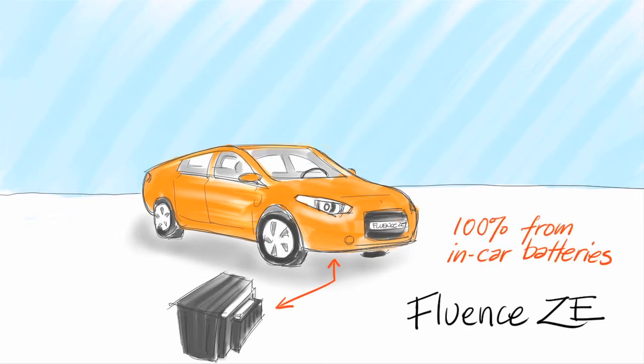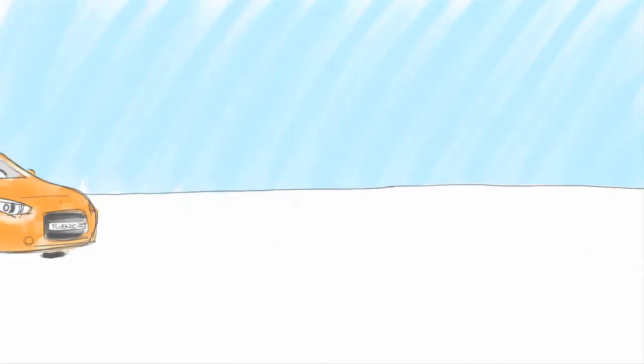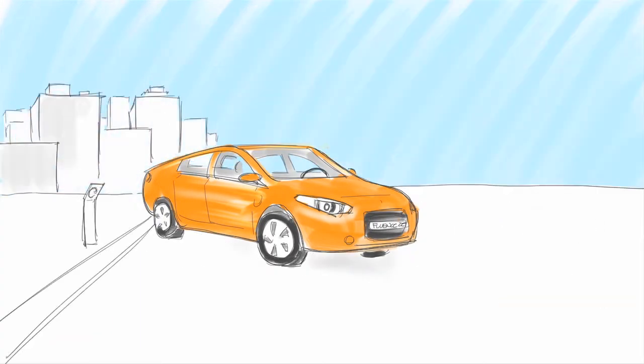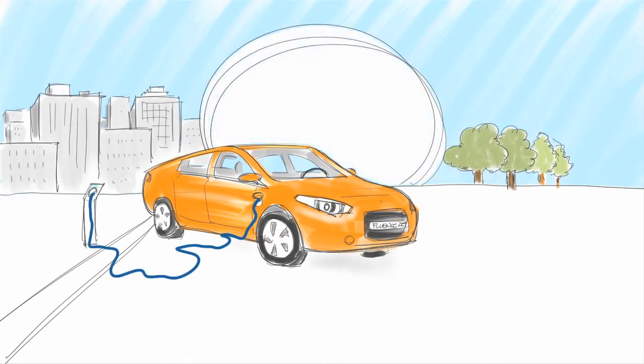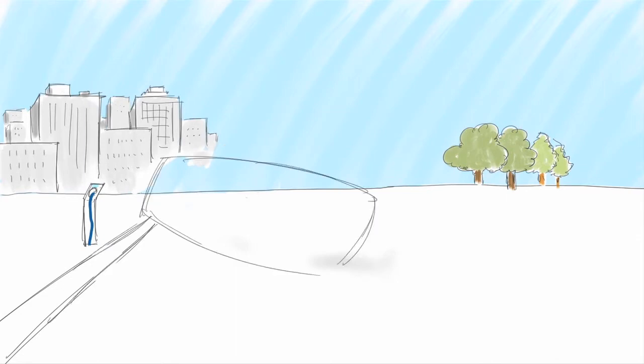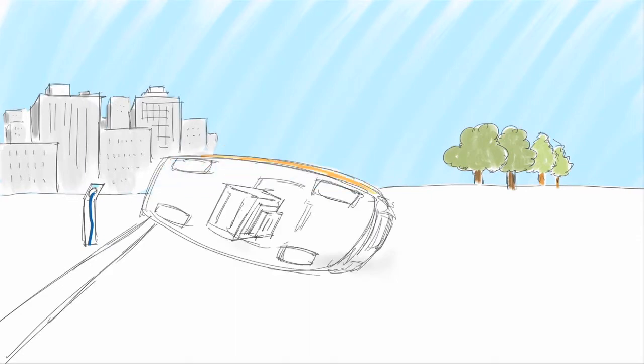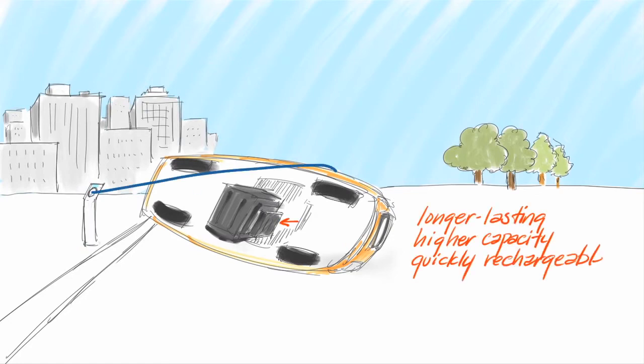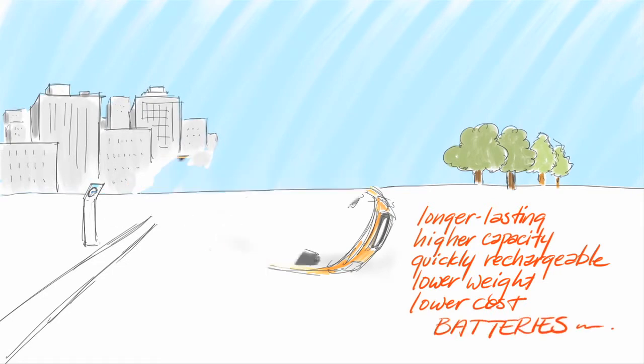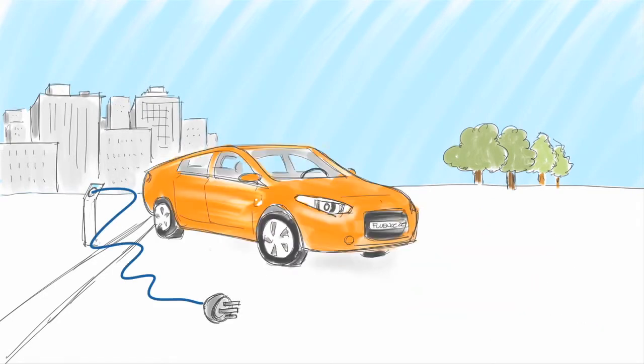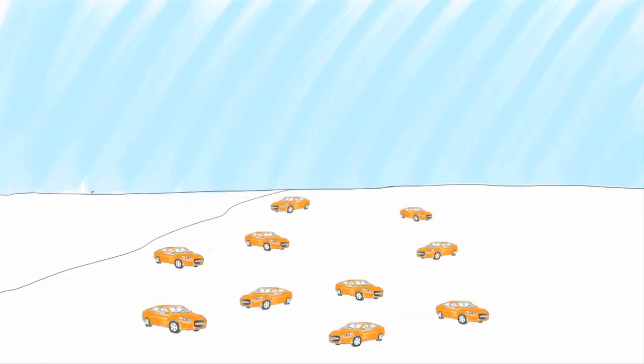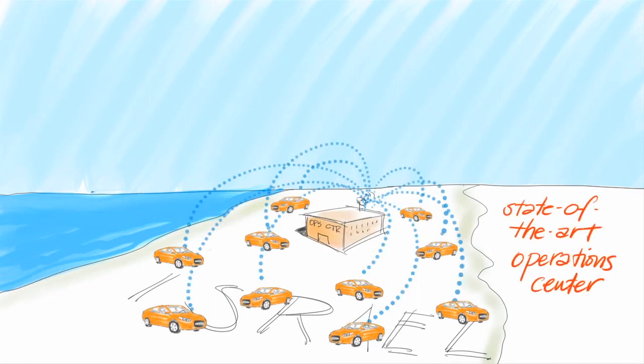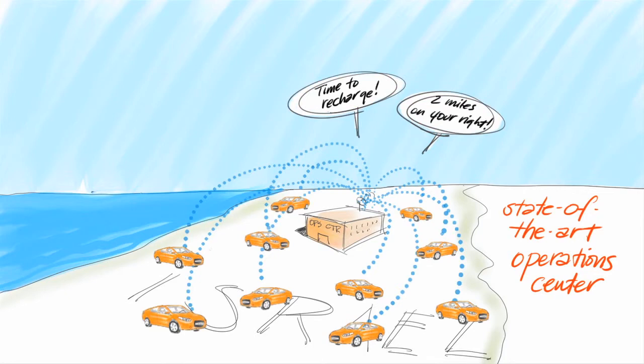These cars operate 100% on energy provided by in-car batteries, which provide a range of 100 miles, take five minutes to switch at a changing station, and can be fully charged in stations at home, offices, or public places in only six to eight hours. Of course, all of this could only be achieved because of major technological evolutions that enabled longer lasting, higher capacity, quickly rechargeable, lower weight, and lower cost batteries, cars and engines operated entirely on electrical power, and a state-of-the-art operation center that is connected to every single car, notifying them when the batteries need to be recharged and guiding them to the nearest location.